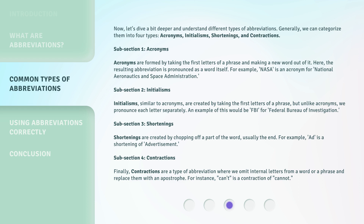Acronyms are formed by taking the first letters of a phrase and making a new word out of it. The resulting abbreviation is pronounced as a word itself. For example, NASA is an acronym for National Aeronautics and Space Administration.